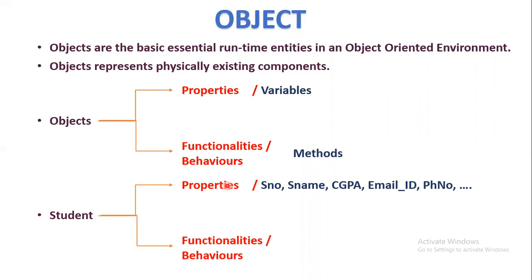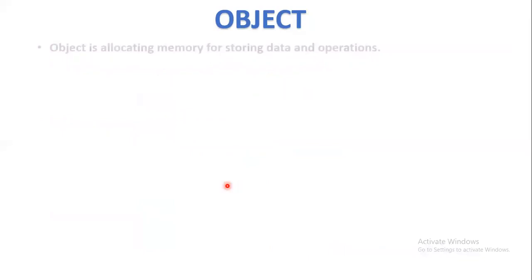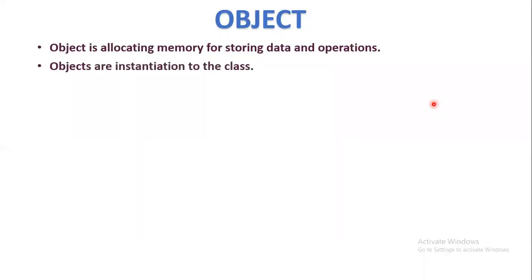Using these properties we can define the behaviors of the student, such as get student, put student, taking exams, and attending classes. An object allocates memory for storing data and operations. Properties are nothing but variables, and behaviors are nothing but methods. An object is an instantiation of a class.